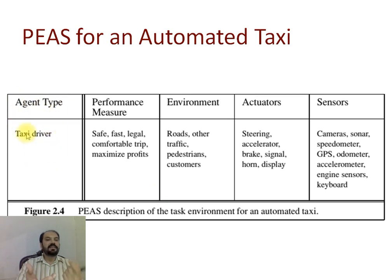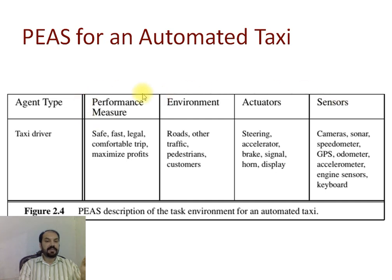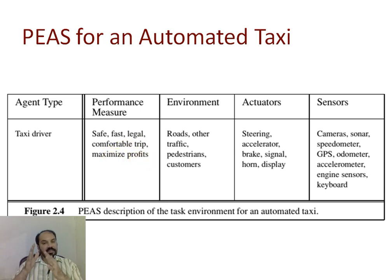For example, if we want to design a taxi driver agent, we will define performance measures, environment, actuators, and sensors. The taxi driver's most probable performance measures are: safe, fast, legal, and comfortable trip and maximized profits — these are used to evaluate the agent's performance.